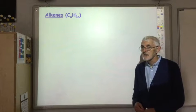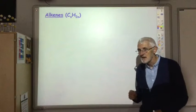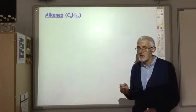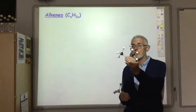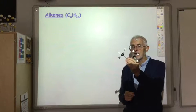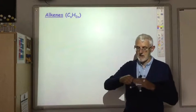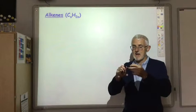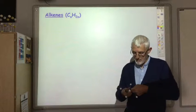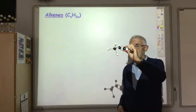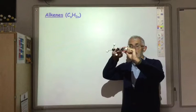The alkenes, like the cycloalkanes, have the general formula CnH2n, so they have two hydrogens less than an alkane. If this is our alkane propane, to turn into an alkene we lose two hydrogens - take one off there and one off there - and then these two carbons join together for a second time to form a carbon-carbon double bond. So general formula is CnH2n and alkenes have a carbon-carbon double bond.